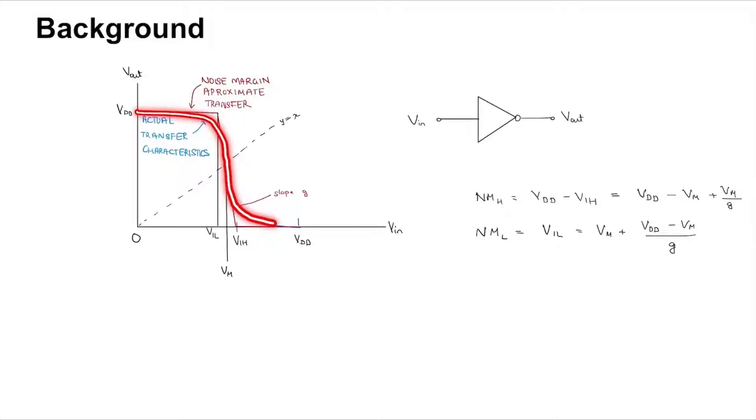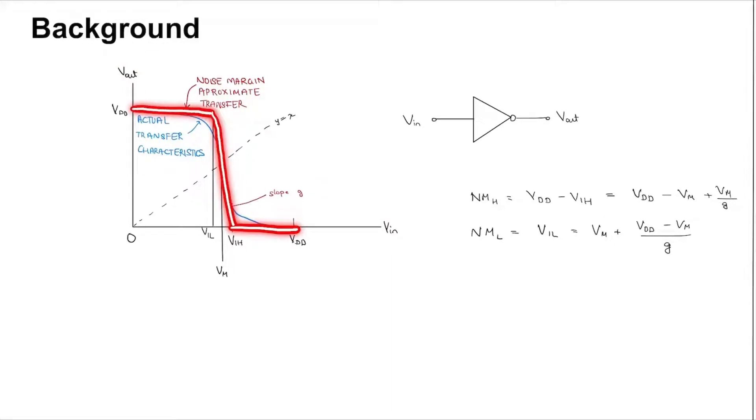In blue you can see the actual transfer characteristics of the inverter, and in red you can see the noise margin approximate transfer characteristics. You find VM, that is the point at which VIN and VOUT are equal, draw a tangent, and then draw two flat lines. This is the noise margin approximate transfer characteristics.